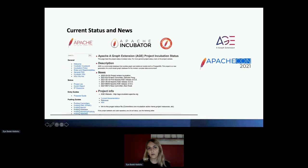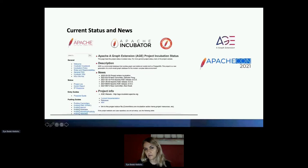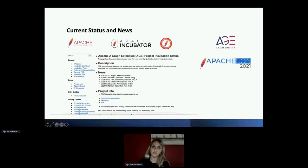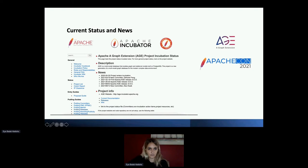Looking at the current status: we entered incubation in April, we have two new committers — one in March and one recently in September 13th. We had our first official Apache release, version 0.3.0, back in February. Our next release was May 2021, and our latest release was in August. Our newest version, 0.6.0, is currently in the voting process and should be out soon. If you're interested, check it out, test it, and let us know how you feel.